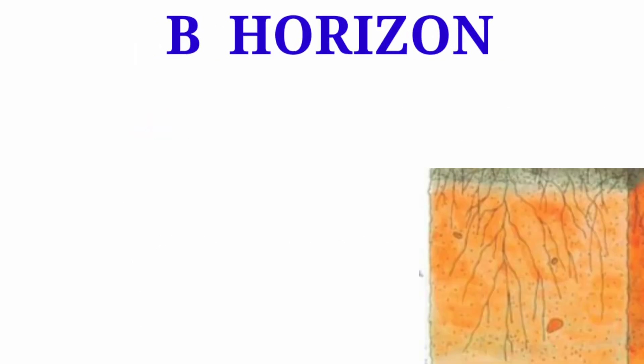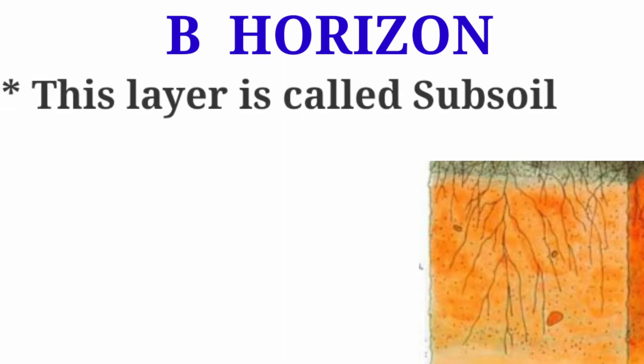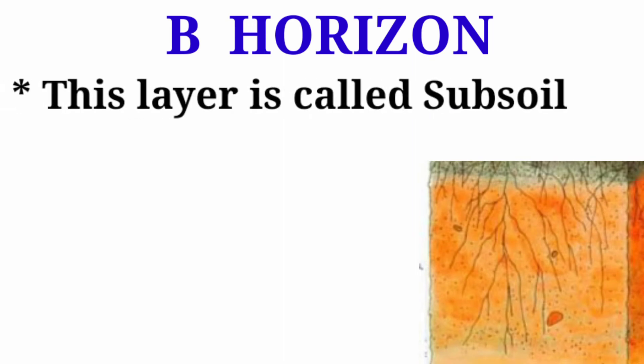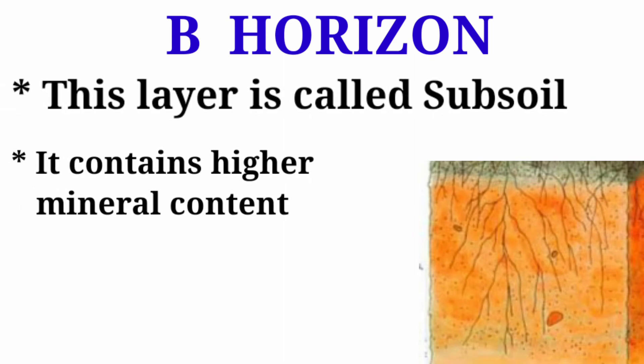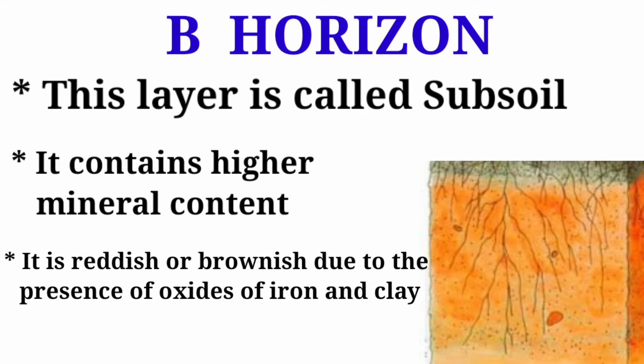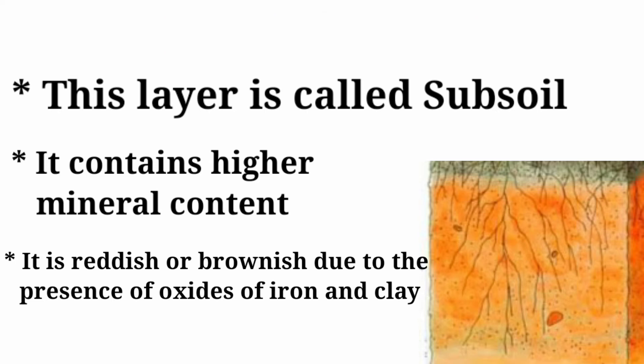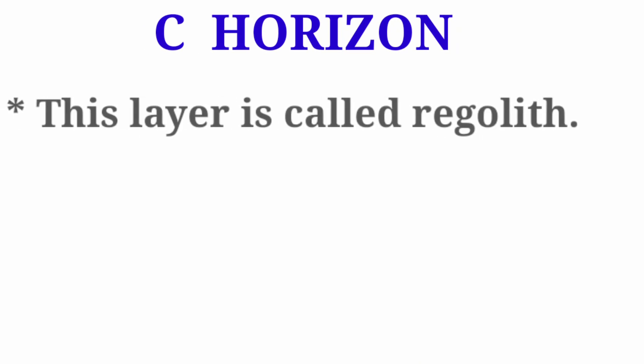B-Horizon: This layer is called subsoil. It contains higher mineral content than the topsoil. It is reddish or brownish due to the presence of oxides of iron and clay.